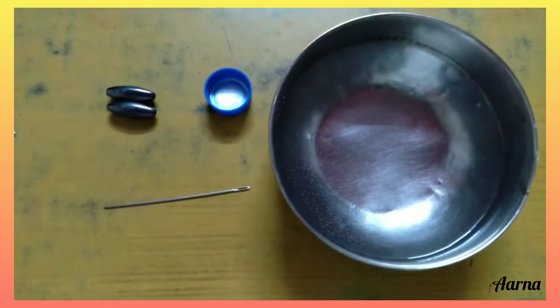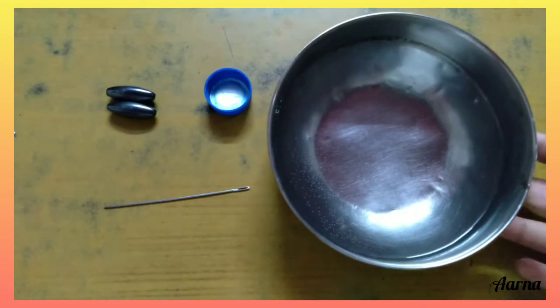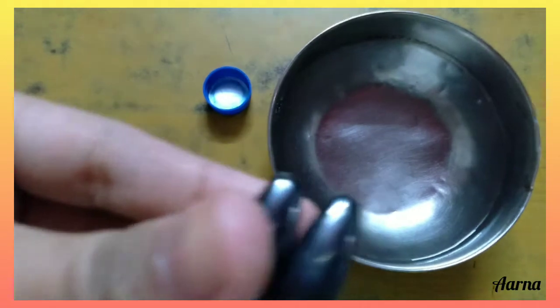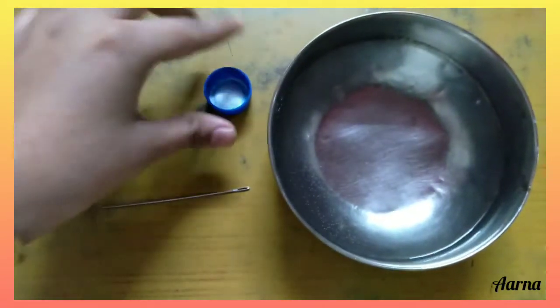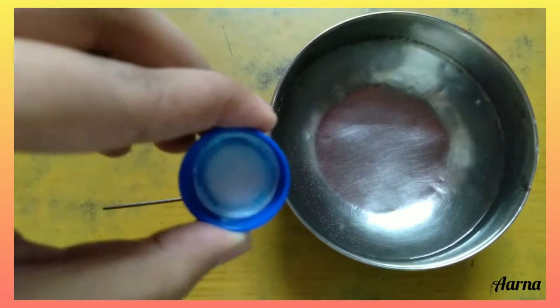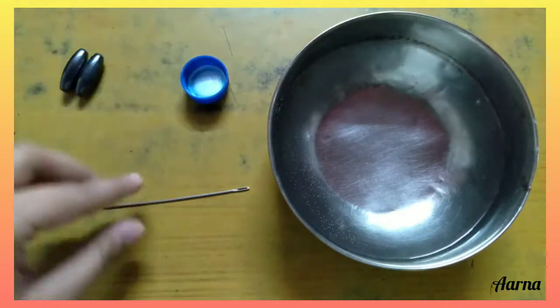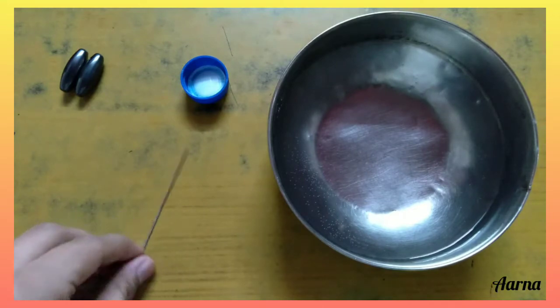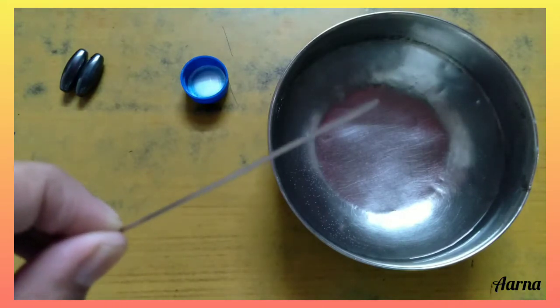To make a magnetic compass we need a bowl filled with water, a pair of magnets, a bottle cap to keep the needle from touching water, and a needle that can stick to our magnet.